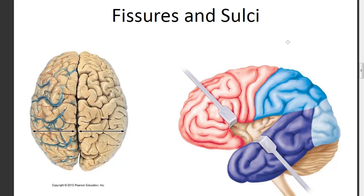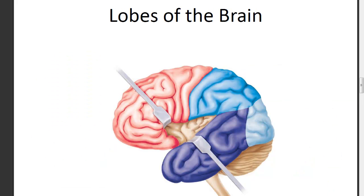The central sulcus sits on the head kind of like a crown on the brain, and it separates the frontal lobe from the parietal lobe. Looking at the lobes: the frontal lobe is shown in pink, the parietal lobe in darker blue, and the occipital lobe in lighter blue at the back base of the brain just above the cerebellum. The temporal lobe runs along the side of the brain.